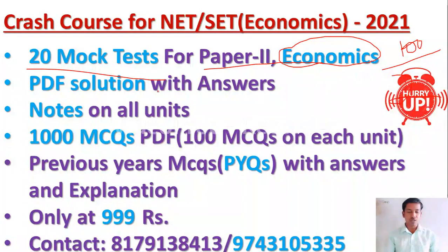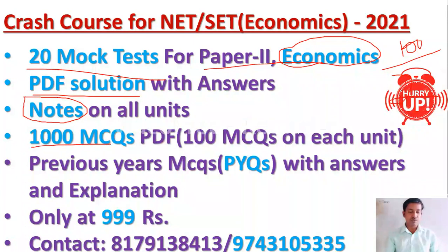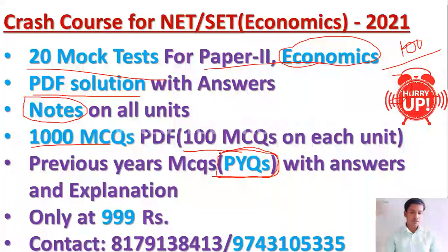After attending the test, you will get the solution PDF of each test. We are also going to provide you notes on all 10 units. If you join this crash course, you will get notes on all the units and also 1000 MCQs PDF — 100 MCQs on each unit. We will also solve previous years' questions of KSET as well as UGC NET with detailed analysis. All of these — 20 tests, notes, and 1000 MCQs PDF — are available only at Rs. 9.99. I think it is a very minimum amount and the comprehensive course is really worth it.